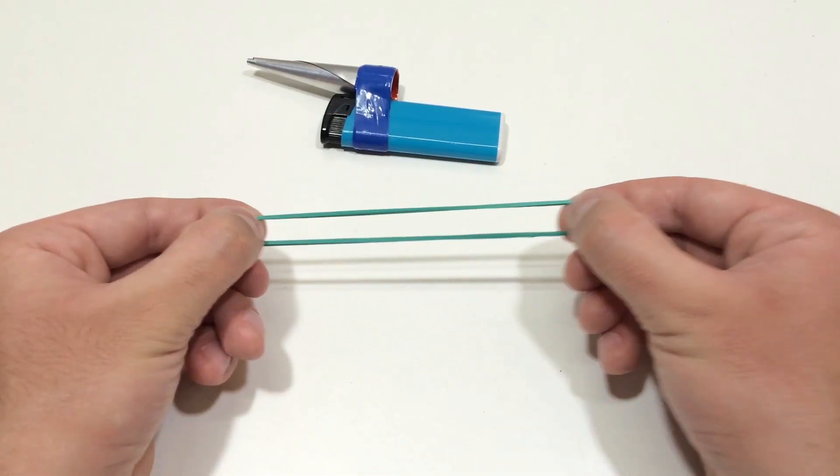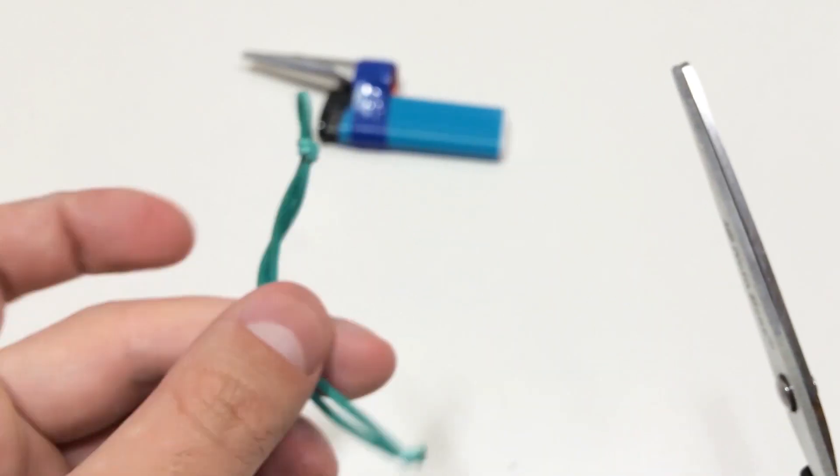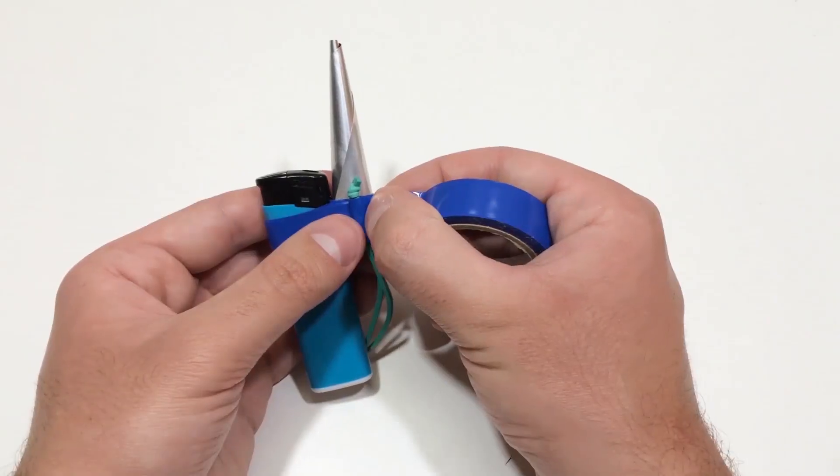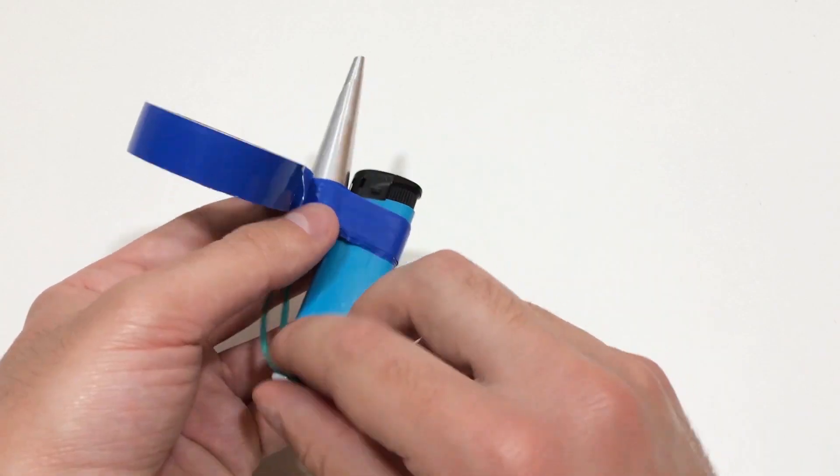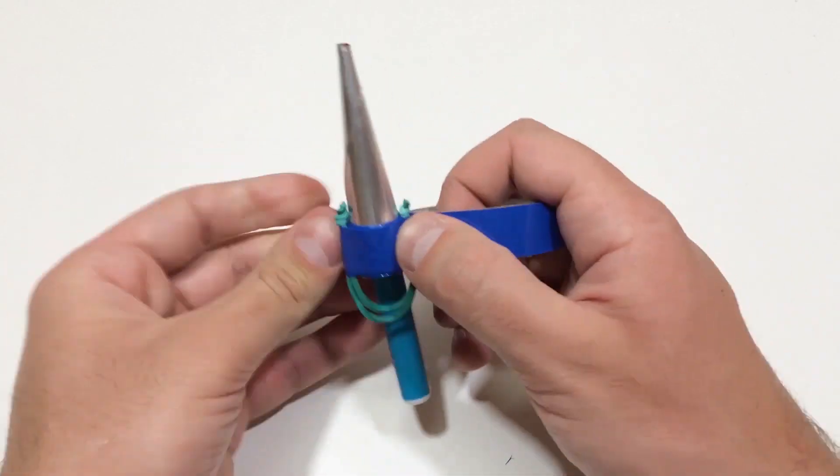Next, we need a rubber band. Why? Because this will create a self-feeding glue system. Tie small knots at both ends, snip off the extra, and attach it to the cone. In theory, this should push the glue stick forward.